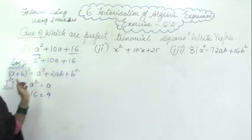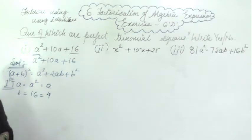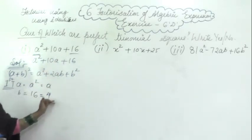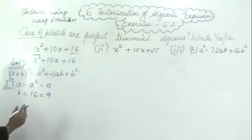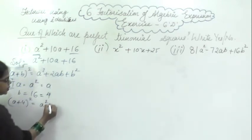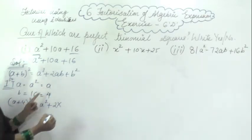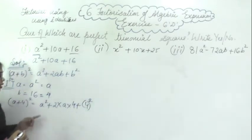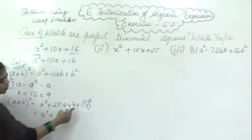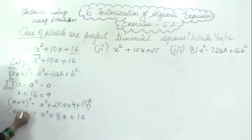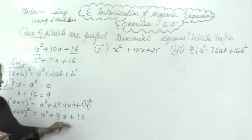Because this A and B term — the first and third terms should be perfect squares of any number. So A into A is A square, and 4 into 4 is 16, so 4 is the perfect square here. Now substituting in the formula you will get A plus 4 whole square equals A square plus 2 into A into 4 plus 4 square. Solving this you will get A square plus 8A plus 16.